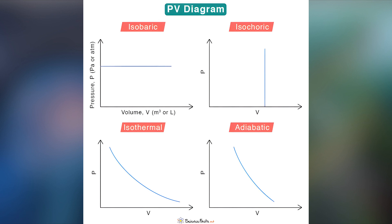An important thing to understand about PV diagrams is that they only apply in thermal equilibrium — meaning no heat is being exchanged between the gas and its surroundings through convection, conduction, or radiation. Temperature can change due to changes in volume, but that's not the same as a transfer of heat. When there's no exchange of heat, that's called thermal equilibrium, and that's the only time PV diagrams legitimately hold, though they're often used for systems in quasi-equilibrium because it's close enough. The PV diagram section is a little hard to understand without actually seeing the graphs — I'll post some on the Facebook page.